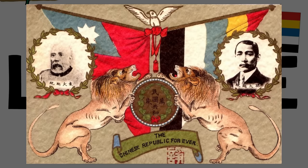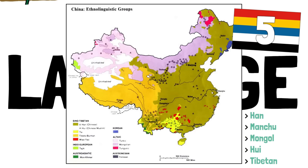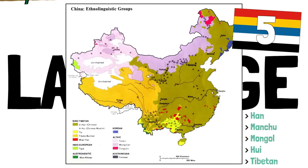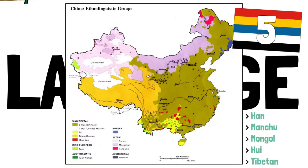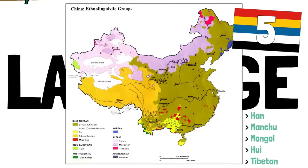They were, and in part still are, the major ethnic groups of the country: the Han, the Manchus, the Mongols, the Uyghurs, and the Tibetans — showing us how these differences go way back in time and are embedded in the people and the territory.